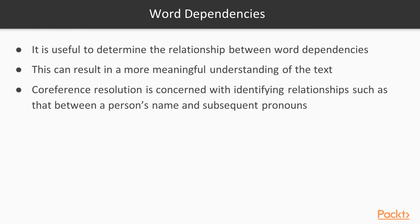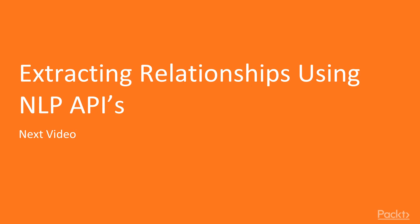With this background, we're ready to go to the next video, which will look at how we extract relationships using NLP APIs. We'll see how we can take some text, generate a parse tree from that text, and display it. We'll also find that often with parse trees, there is more than one way of actually parsing a sentence.